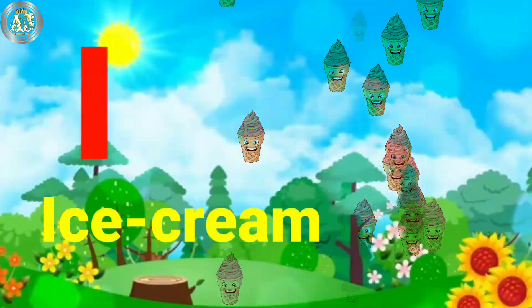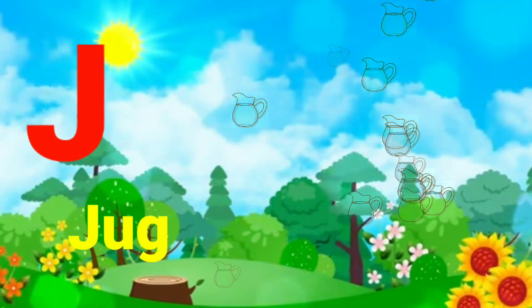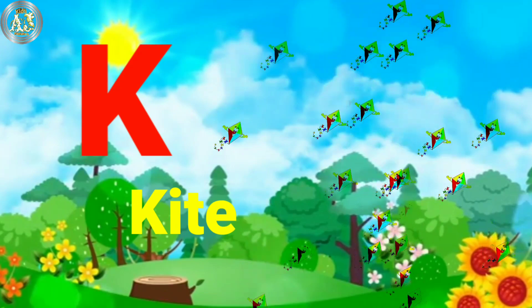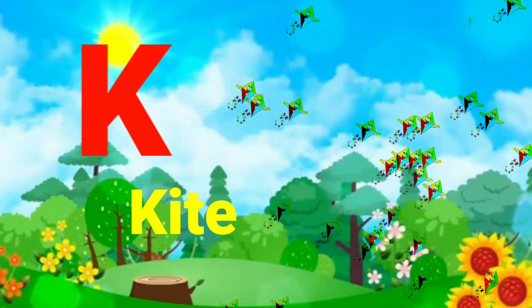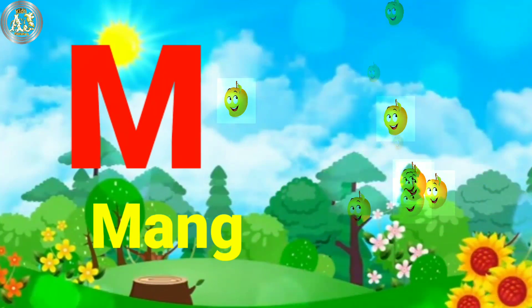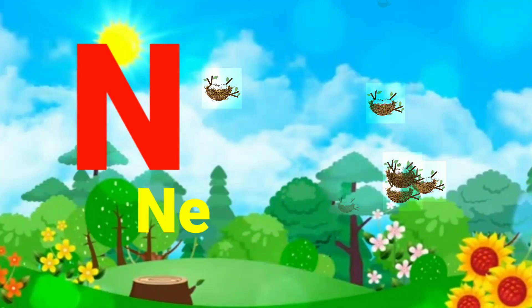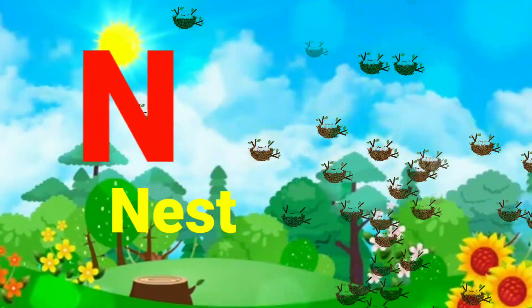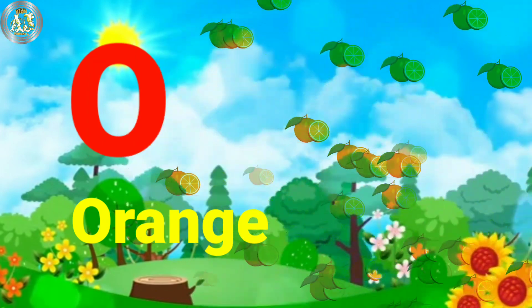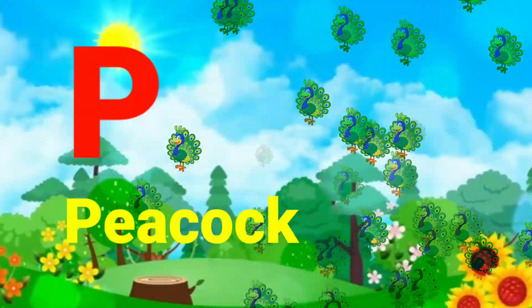I for ice cream. J for jug. K for kite. L for lion. M for mango. N for nest. O for orange. P for peacock.